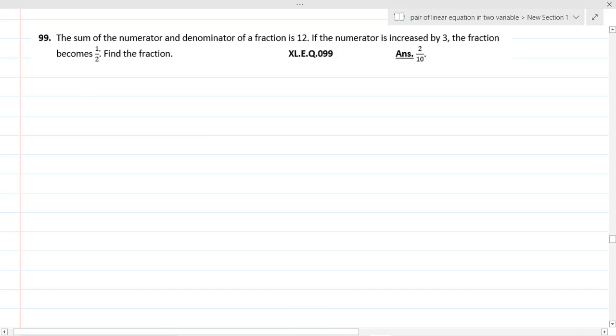Question number 99. The sum of the numerator and denominator of a fraction is 12. And if the numerator is increased by 3, the fraction becomes 1 by 2. Find the fraction.